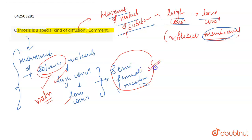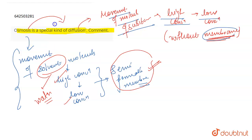This is very important: they pass through a semi-permeable membrane, and no membrane is needed in diffusion. That is why osmosis is considered a special kind of diffusion, because there is a movement of molecules from a region of high concentration to a region of low concentration. That's all for the question.